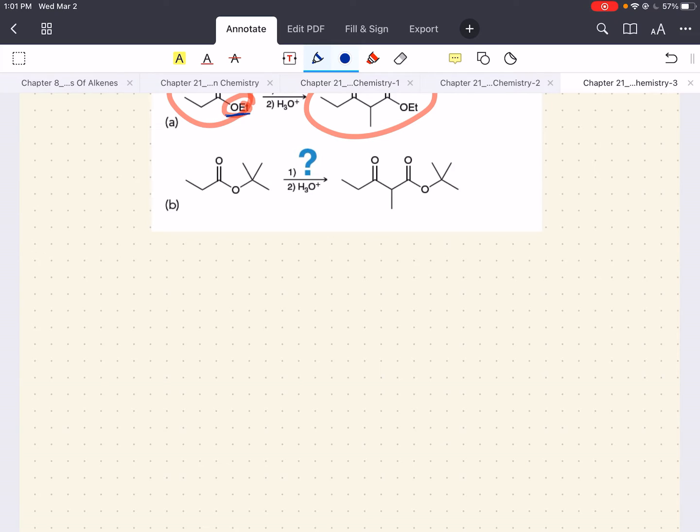For B, same principle here. We want to preserve this tert-butoxide group. And so, what we want to use for a base is potassium tert-butoxide, as to preserve the tert-butoxy group that is present. Fantastic.